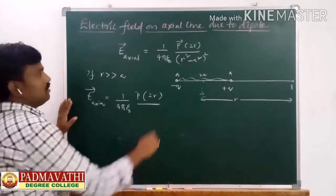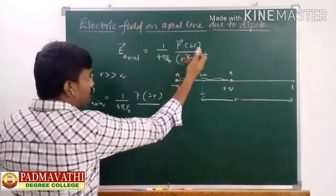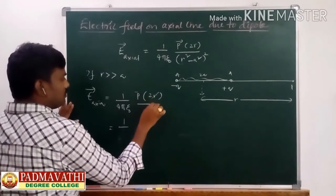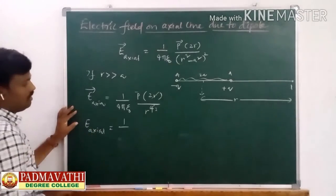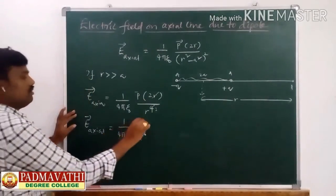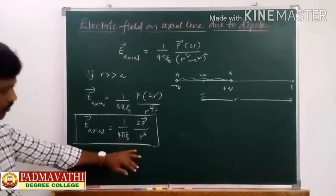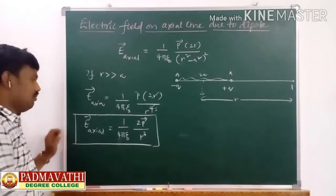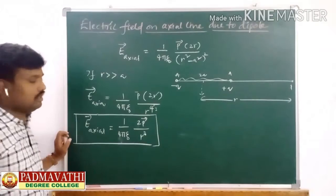So the final simplified formula is E_axial = 1/(4πε₀) × 2P / R³. This is the formula we use in most problems. Be careful with this particular formula: E_axial = (1/4πε₀)(2P/R³), where P is the electric dipole moment.